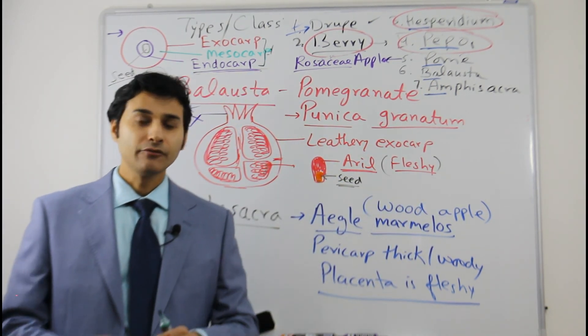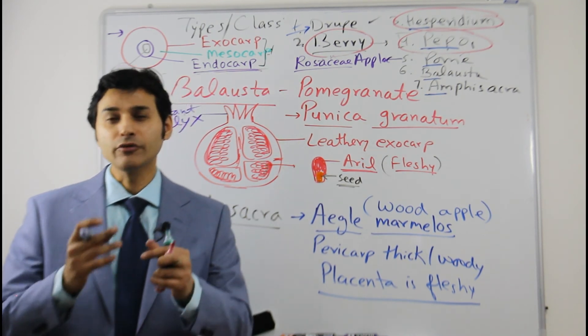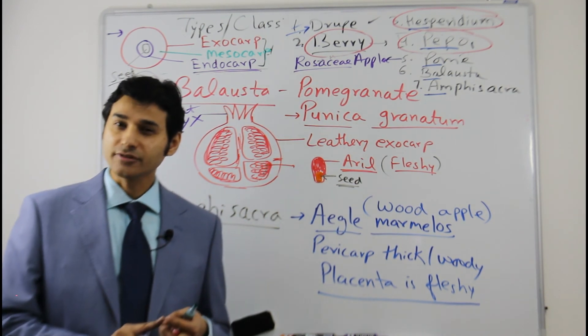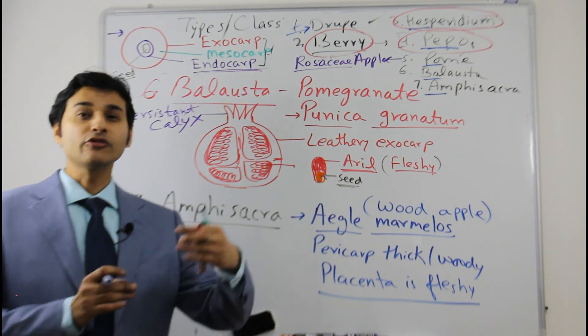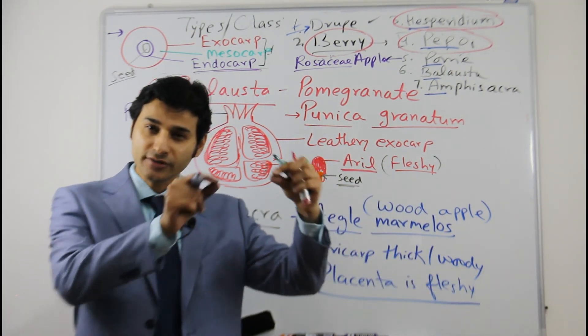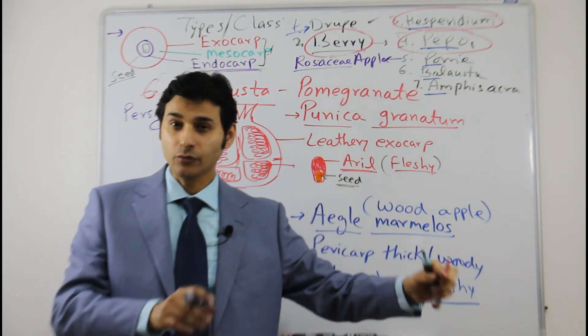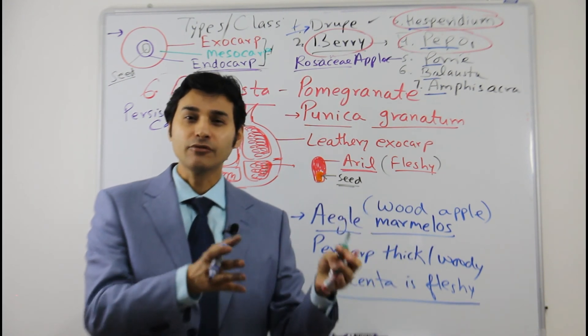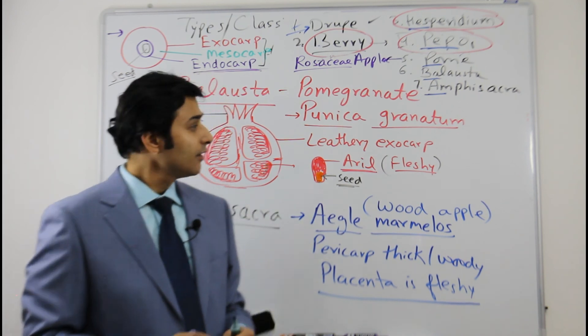Each fruit type in detail about their characteristic features along with their examples. I hope that the simple fleshy fruits types are clear to you. Next video we will be discussing about simple dry fruits, because the simple dry fruit is again divided into dry dehiscent and dry indehiscent. We will discuss about that also, and I will tell you how to remember that very easily so that you will never ever forget that.